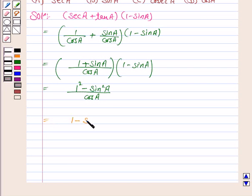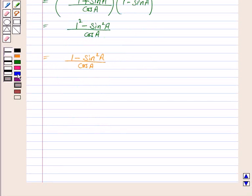It is 1 minus sin square A upon cos A. Now we know that 1 minus sin square A is cos square A upon cos A.